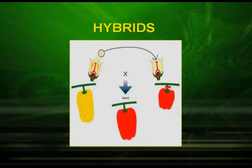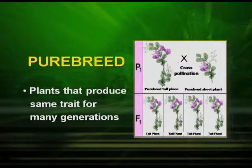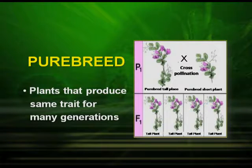Another important term is hybrid. As you see in the diagram, there is a cross between one plant and another — a yellow crossed with a red — and a hybrid is produced that is somewhat in between the two parents. Another key term is pure breed, which gave Mendel all his success. These are plants that produce the same trait for many generations — for example, a pure tall plant and a pure dwarf plant.